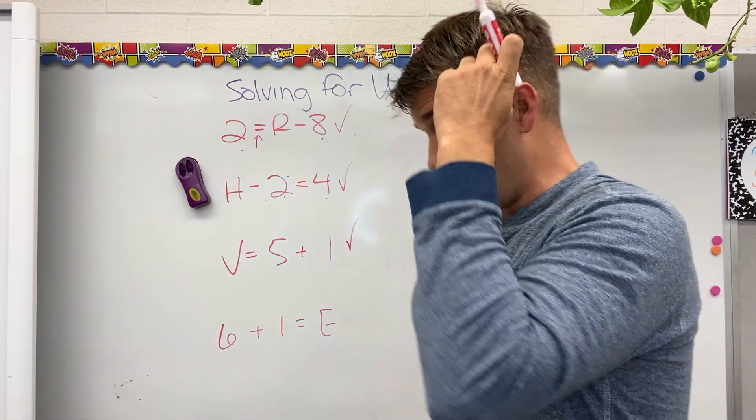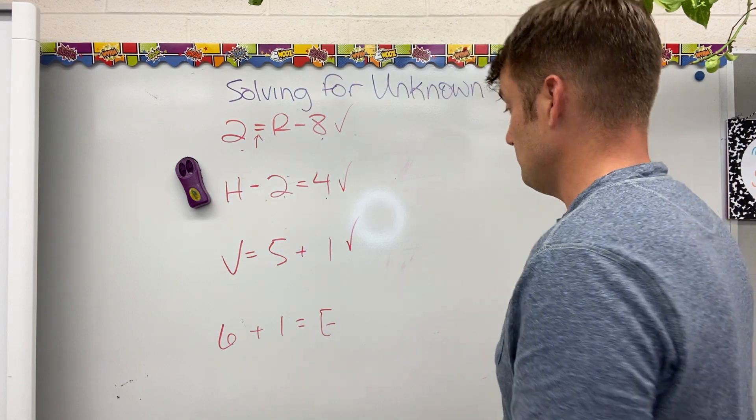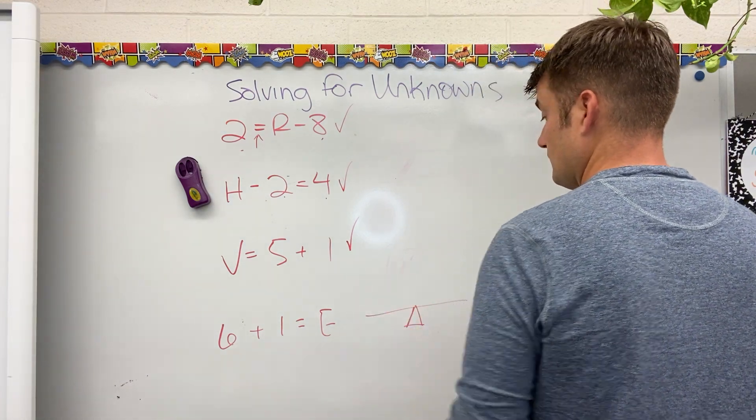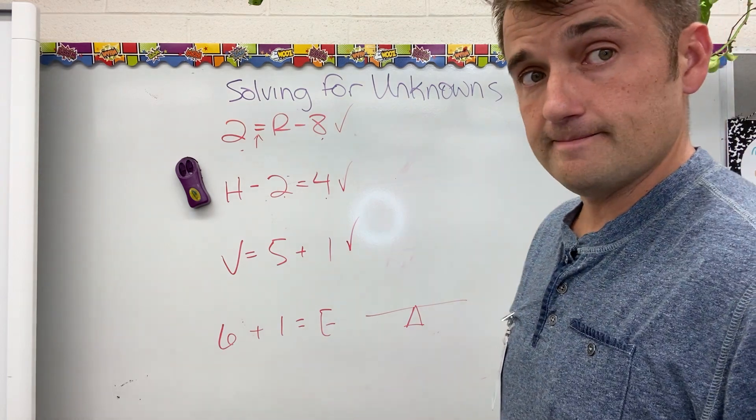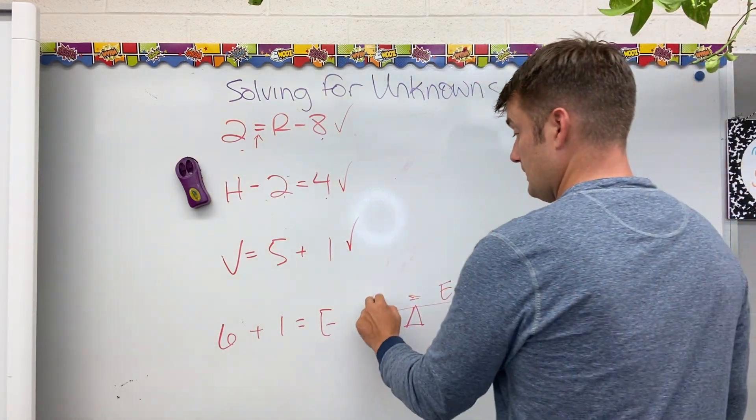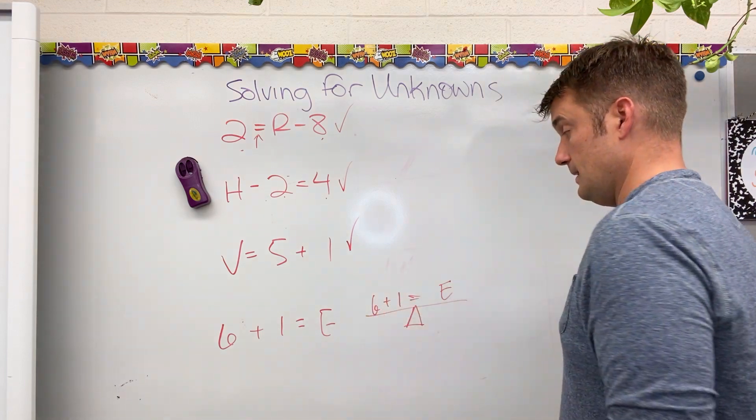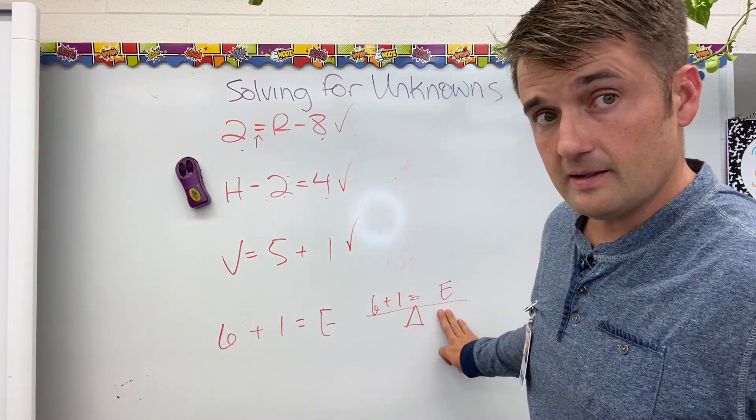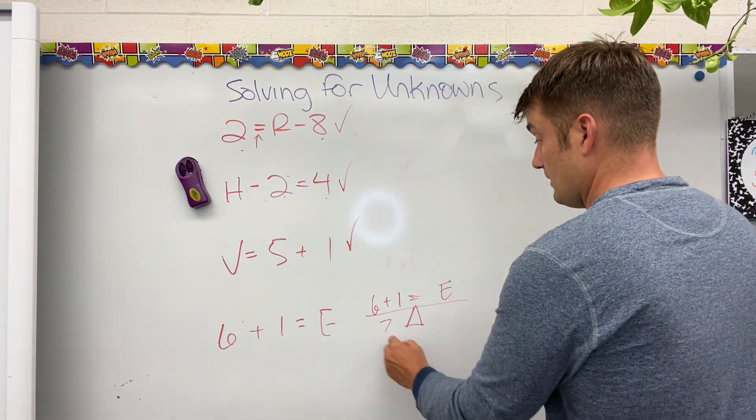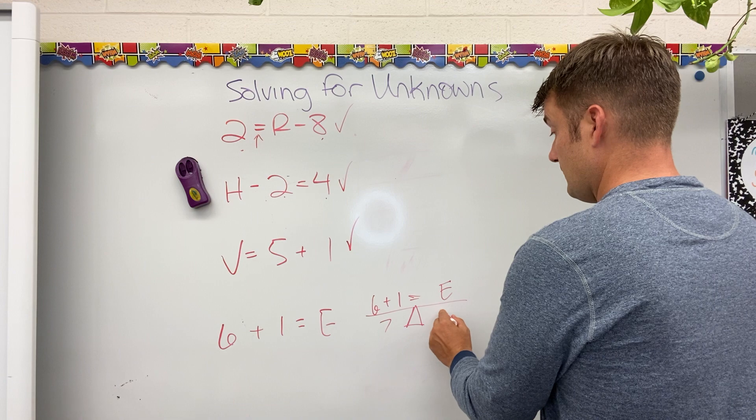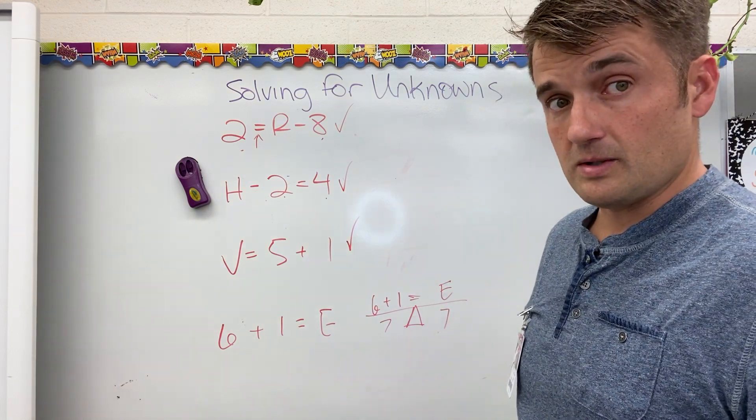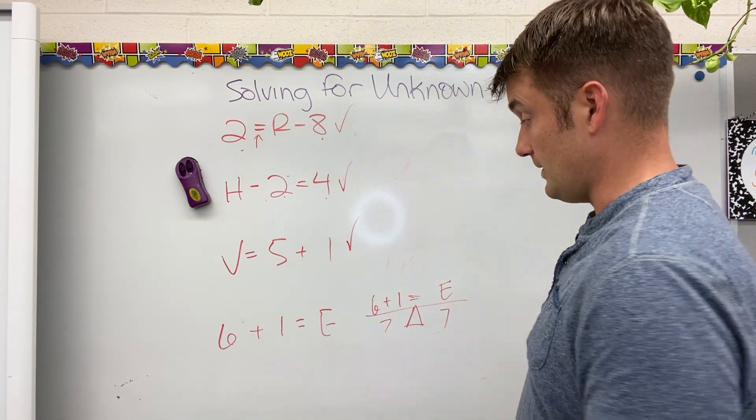6 plus 1 equals e. e is by itself. 6 plus 1. I can't figure out e, even though it's by itself, right? But I can figure out 6 plus 1. 6 plus 1 is 7. If 6 plus 1 is 7, e must be 7, because that balances my equation. So, I think e is 7.